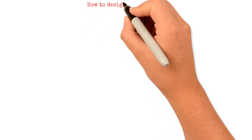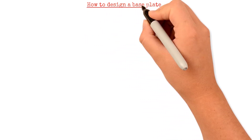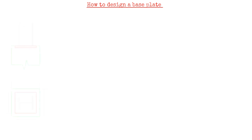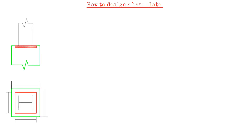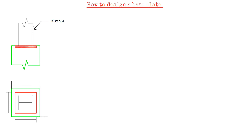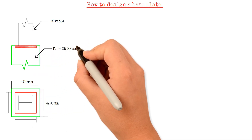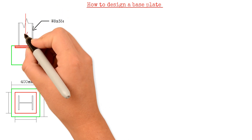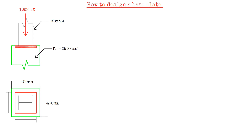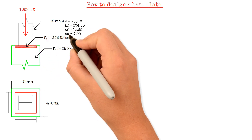Welcome back to the channel. For today's video, we will cover the design of a base plate. Let us consider a steel column W8x35, which is supported by a concrete pedestal having dimensions of 400 mm by 400 mm and a compressive strength of 28 N/mm². The steel column is subjected to an axial compression load of 1,800 kN. Design the base plate that could carry the load, given that the yield strength of the base plate is 248 N/mm².